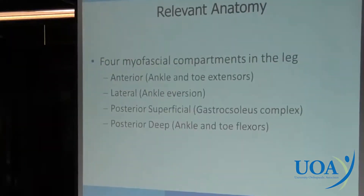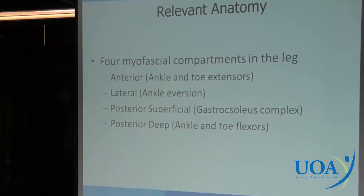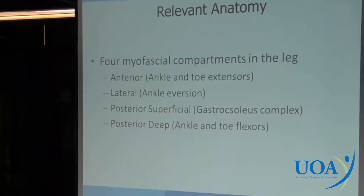Relevant anatomy: there are four compartments in the leg. There are the ankle dorsiflexors, which is your anterior compartment. Your ankle everters, which is the peroneal group on the lateral side. You have your posterior superficial, and finally your posterior deep.